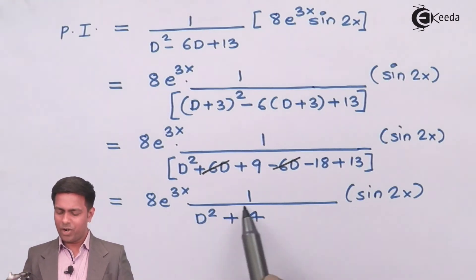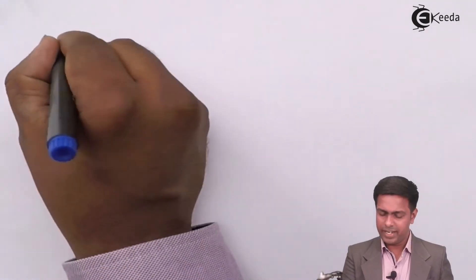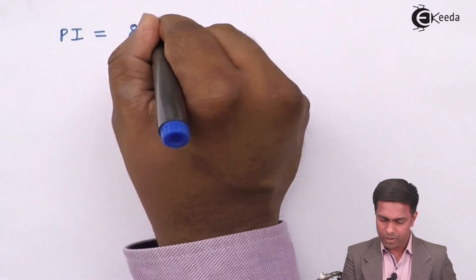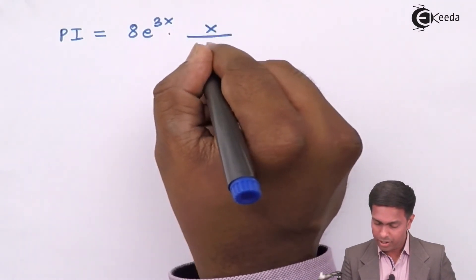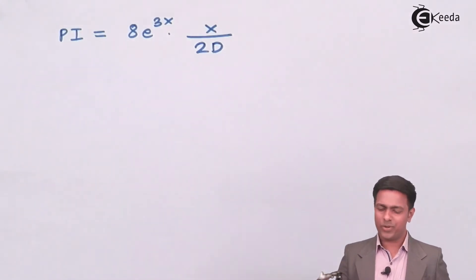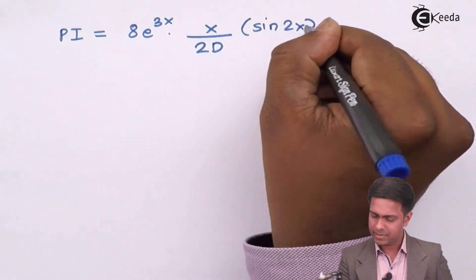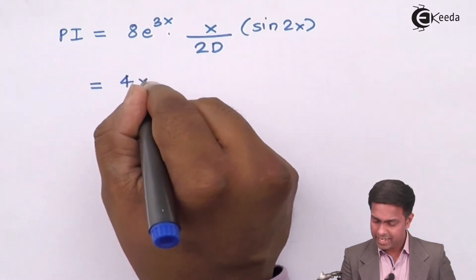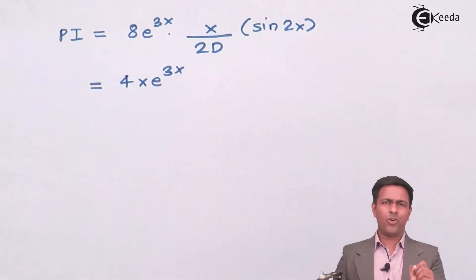Here we will get PI as 8 e to the power 3x into x upon 2D. So 2D is a derivative of D² + 4 into sin of 2x.